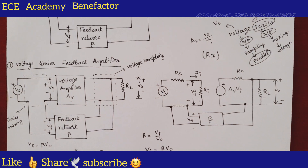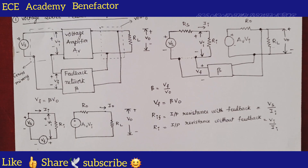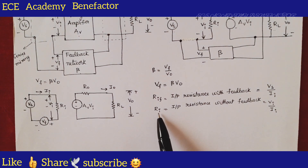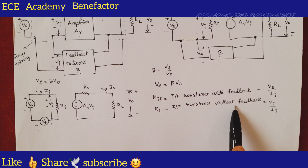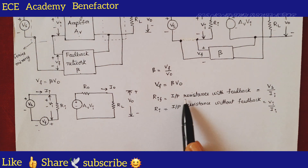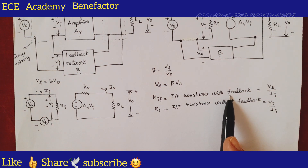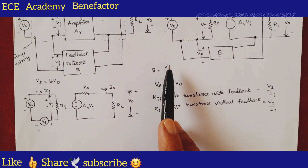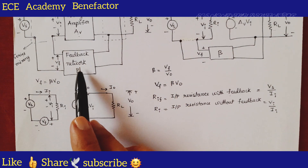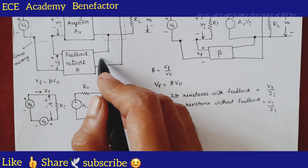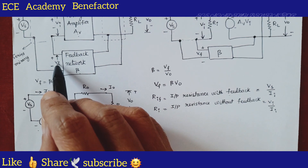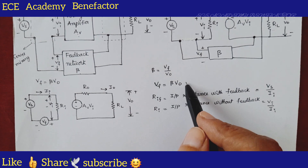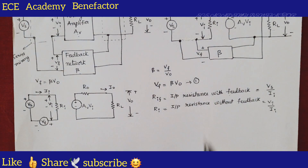Let us now start the derivation of Rif. You should be familiar with the nomenclature: Ri is the input resistance without feedback, Rif is the input resistance with feedback, and beta is the feedback ratio. The ratio means output by input — for the feedback network, the input is Vnaught and the output is Vf. So Vf divided by Vnaught equals beta, meaning Vf = beta × Vnaught. This is equation one.